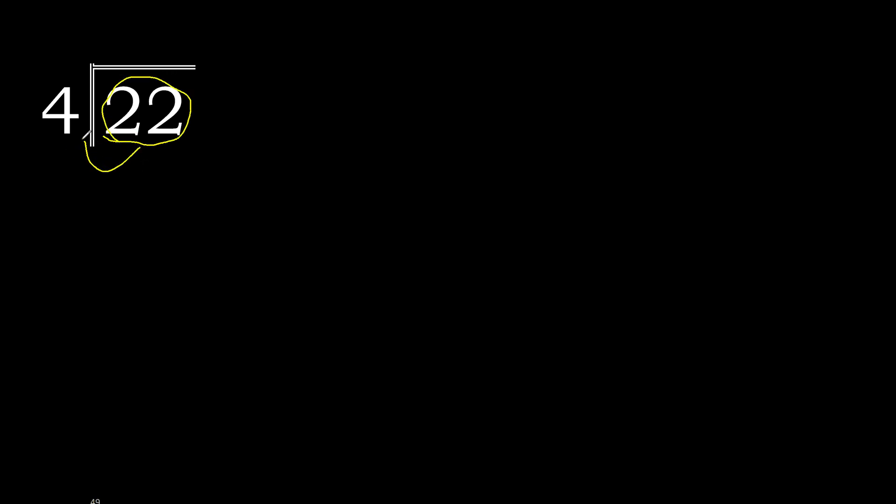22 divided by 4. 2 is less, therefore move to the next. 22 is not less, therefore with 22: 4 multiplied by which number is nearest to 22 but not greater?